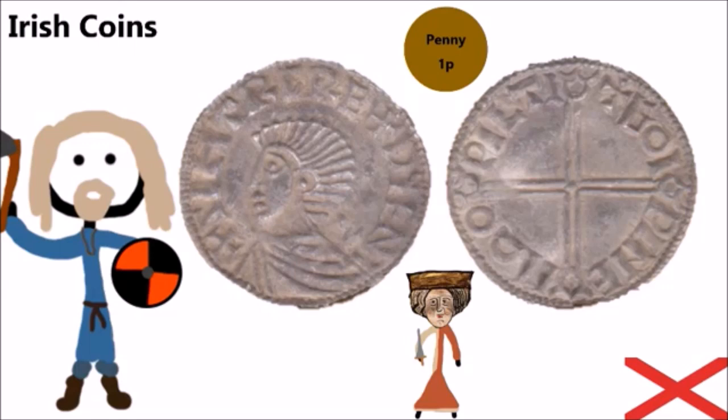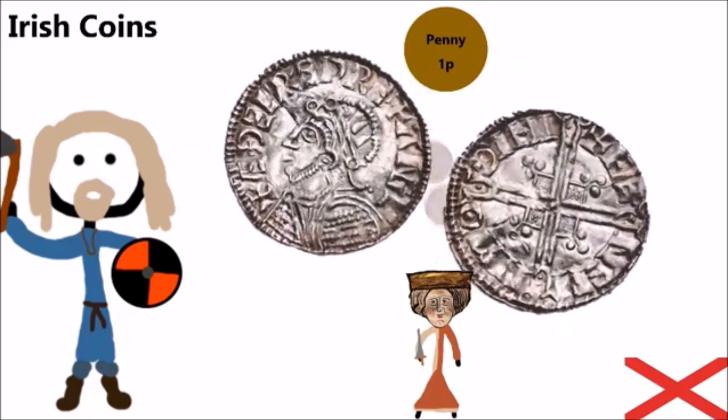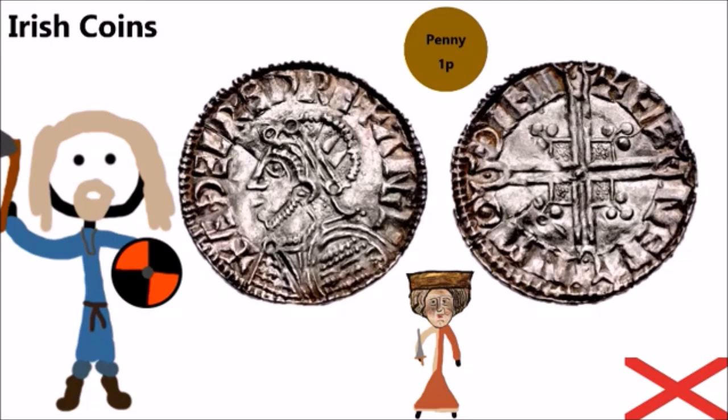Here is another Long Cross coin from between 999 AD and 1005 AD, which again features Seythric Silkbeard's face. This coin is quite interesting because it is unknown what the writing on it is meant to say. Here is another Long Cross but minted later, between 1009 and 1011, and it's a much rarer coin.